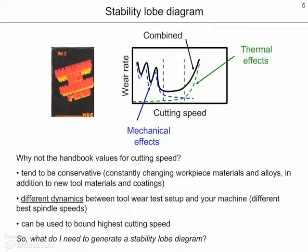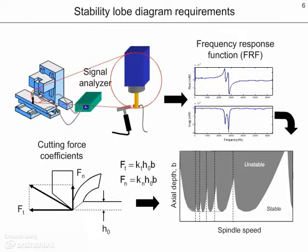However, these handbook values can be used to bound the highest cutting speed. So the question we may ask is, what do I need in order to generate a stability lobe diagram? There are two requirements. The first is the frequency response function at the end of the cutting tool, which describes the dynamic response or vibration behavior of the tool holder spindle machine tool. The second is a model of the cutting force, generally described using cutting force coefficients, which relate the area of the chip being removed to the force components. Given these two items of information, a stability lobe diagram can then be generated.